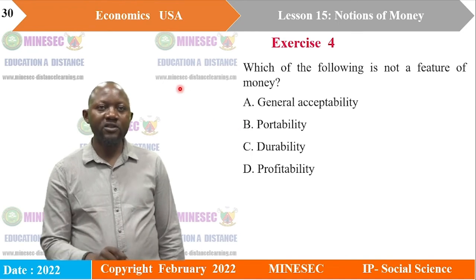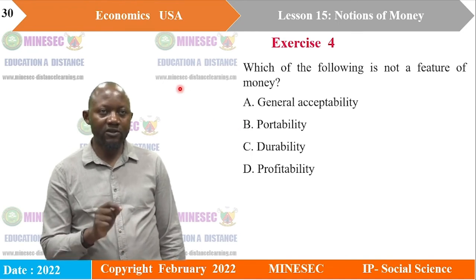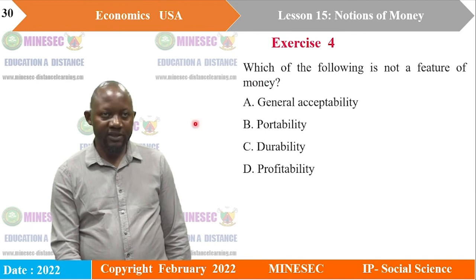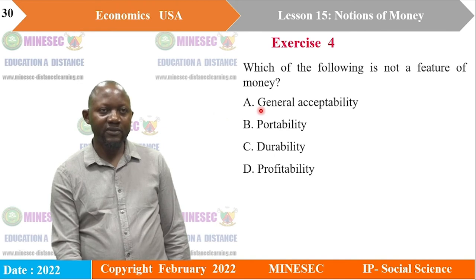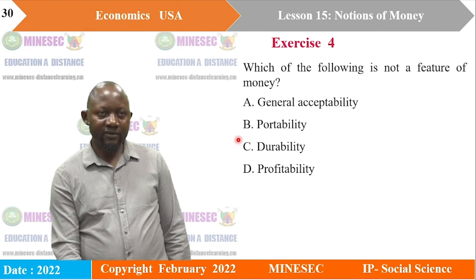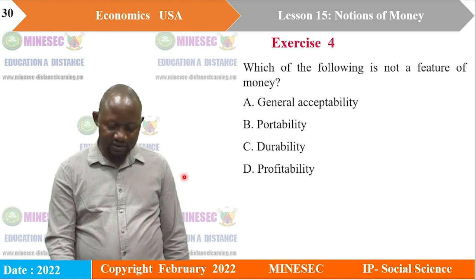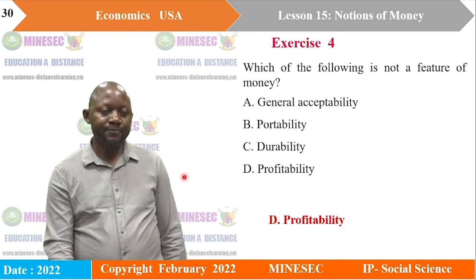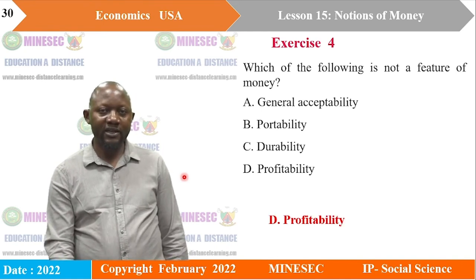Which of the following is NOT a feature of money? A) General acceptability, B) Portability, C) Durability, or D) Profitability. The other three are characteristics of money — profitability is not. So the correct answer is D: profitability.